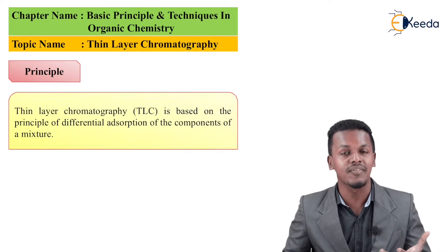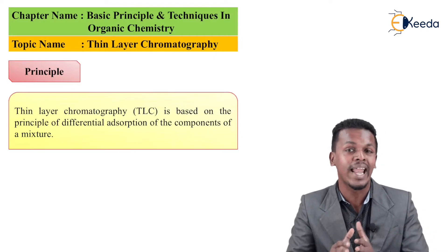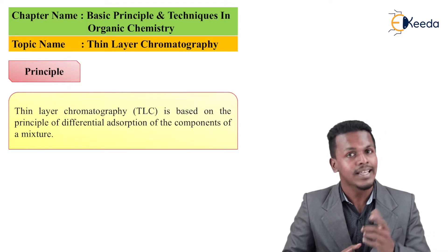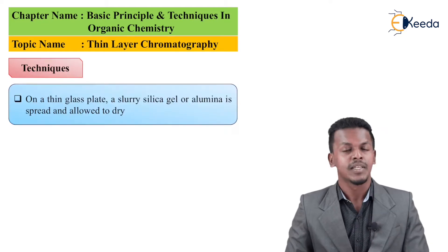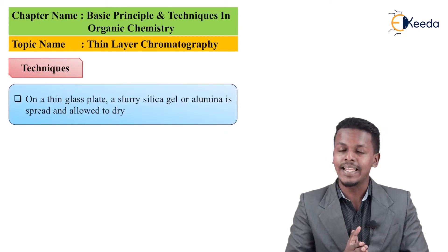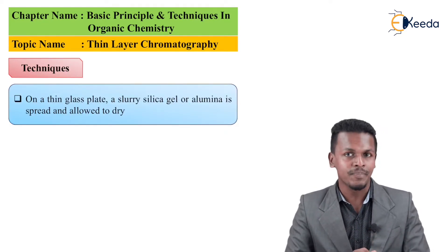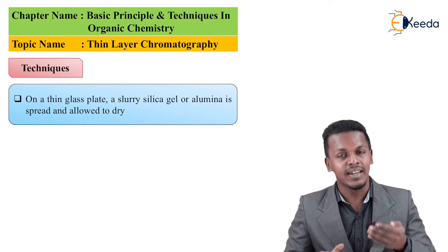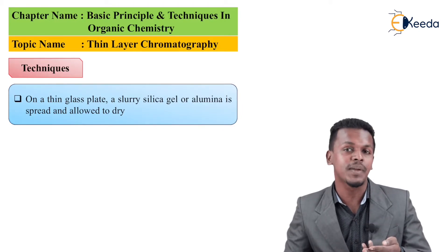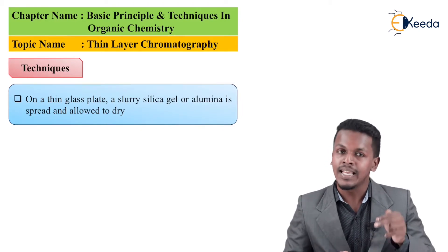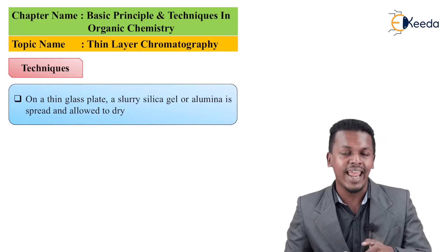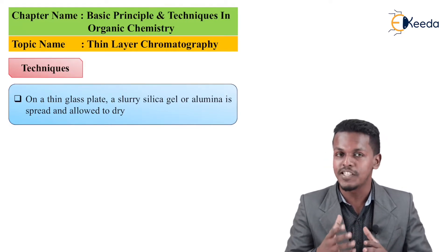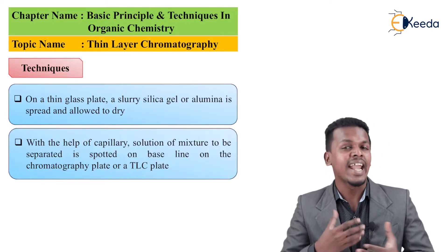The techniques which are very important and which we must understand are the following. For this technique we need a glass plate, and this glass plate is dipped in silica gel or alumina gel. This kind of glass plate is basically known as a chromatoplate.